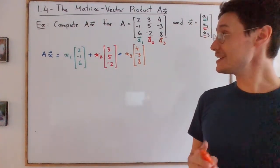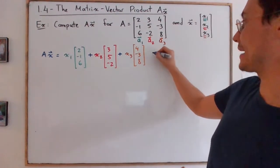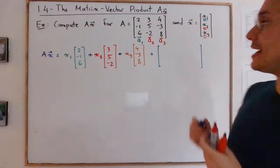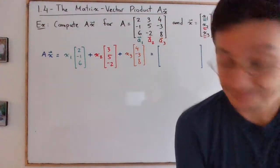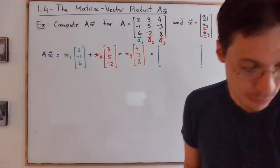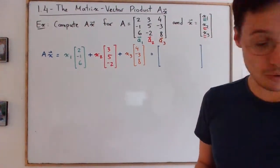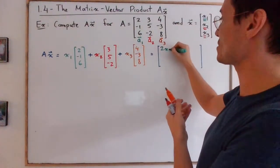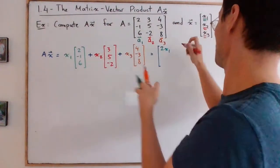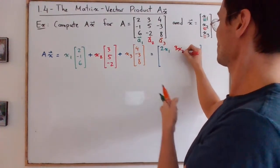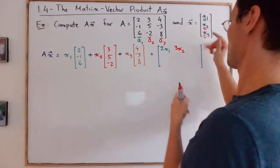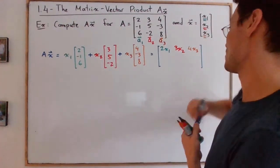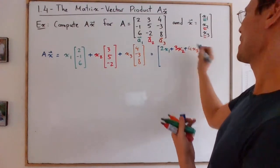And the idea here is to write the resulting vector. I will keep the color coding. So we will have here 2x1, so this is the first row: 2x1 plus 3x2 plus 4x3.